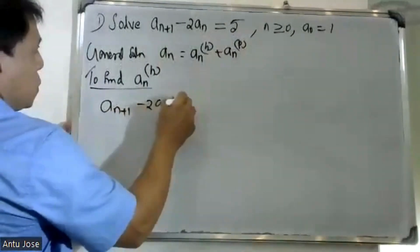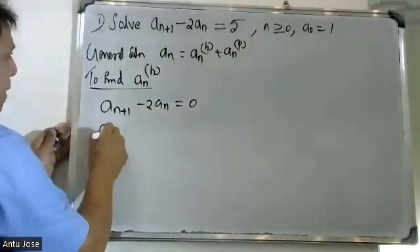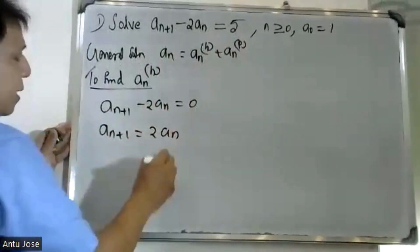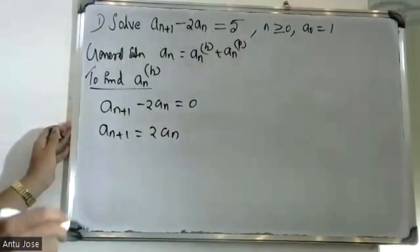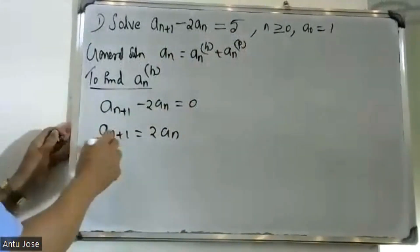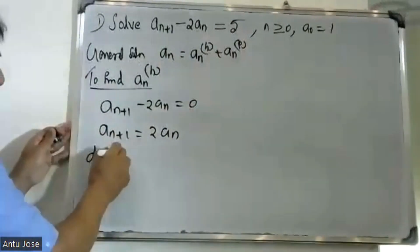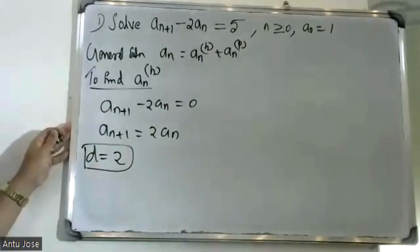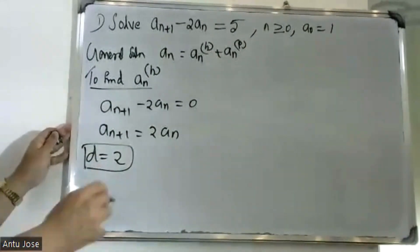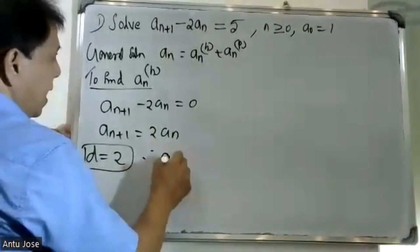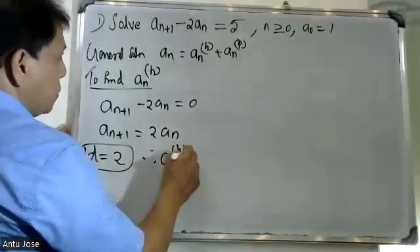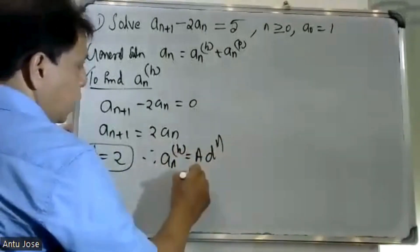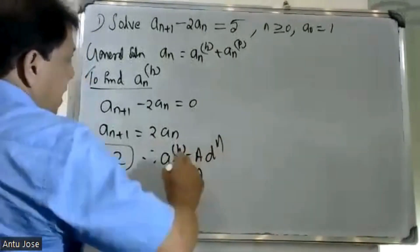Setting a(n+1) minus 2a(n) equal to 0, we get a(n+1) equal to 2a(n). Therefore the homogeneous solution is a(n)^h equals C into 2 raised to n, where C is a constant.